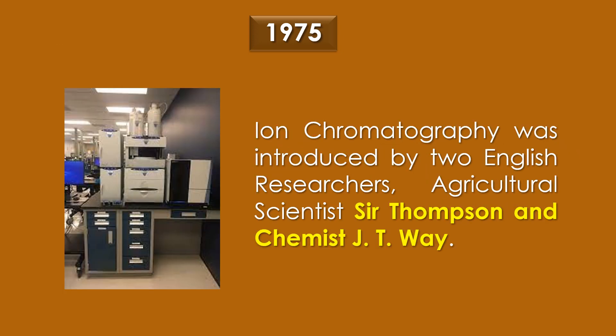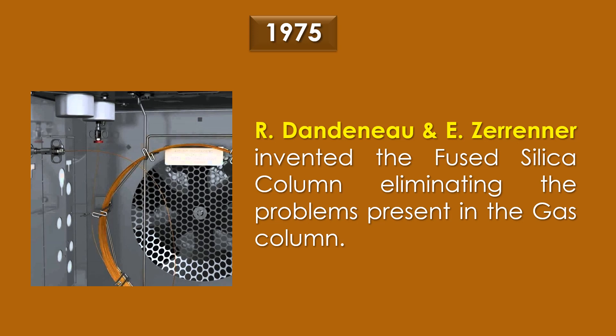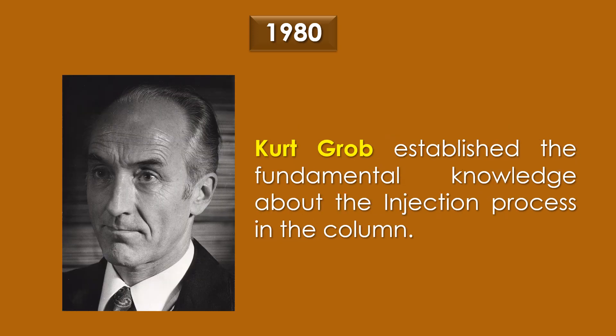In 1975, ion chromatography was introduced by two English researchers, agricultural scientist Sir Thomson and chemist J. T. Way. Also in 1975, R. Dandineo and E. Zeriner invented the fused silica column, eliminating the problems present in the gas column. In 1980, Kurt Grob established the fundamental knowledge about the injection process in the column.